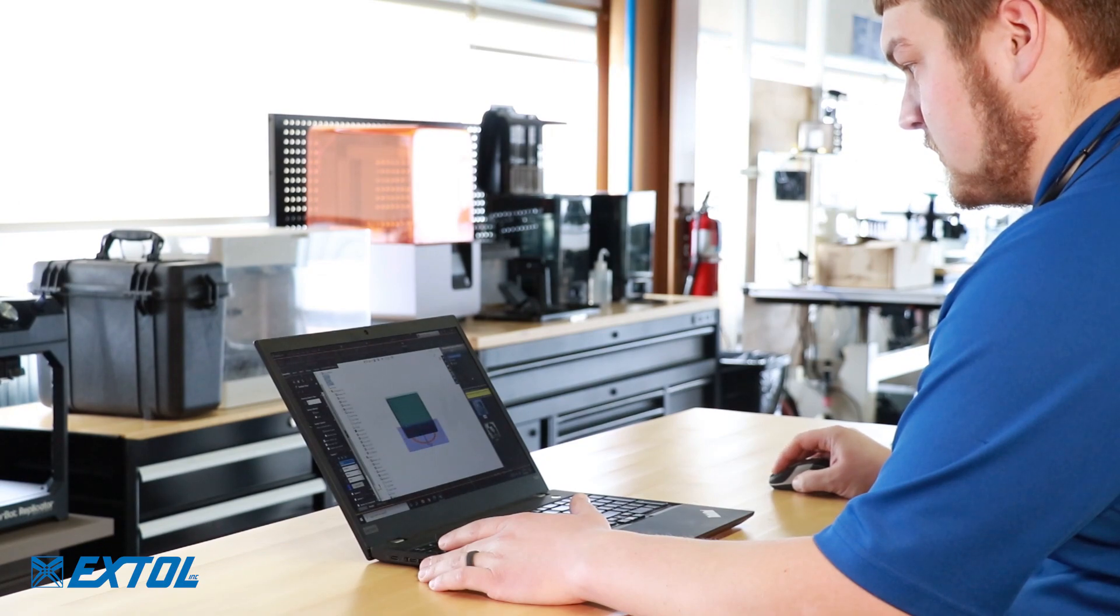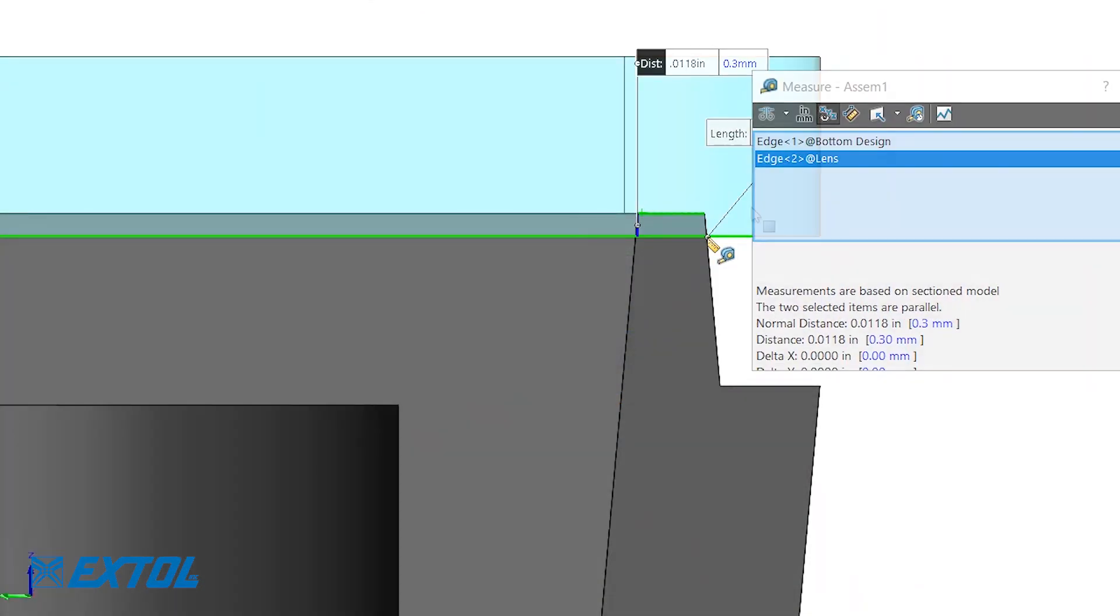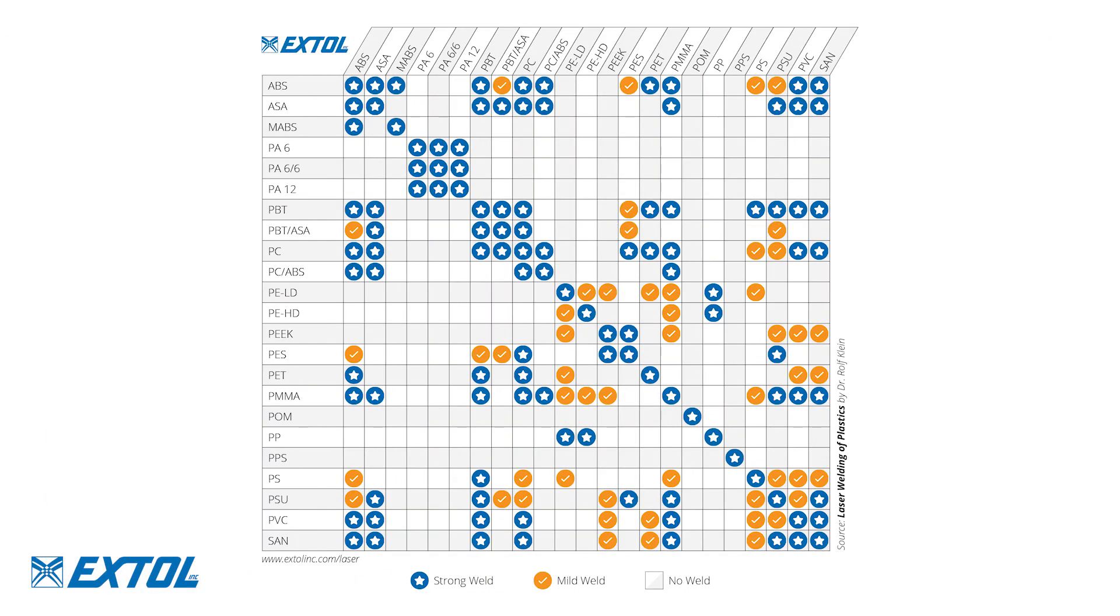We start by analyzing your part design and offering recommendations to optimize the weld geometry. We also help you select the best materials for your application, which is crucial in laser plastic welding.